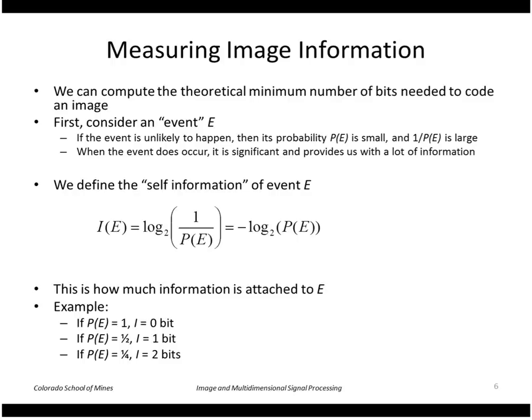As an example, if the probability of the event is 1, then the information is 0, carries no information because we already know it's going to happen. If the probability is a half, the information carried by each event is 1 bit, basically yes or no, heads or tails. And if it's a fourth, the information of an event is 2 bits, and so forth.